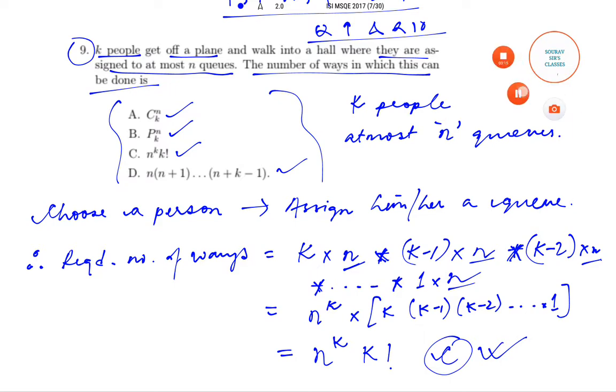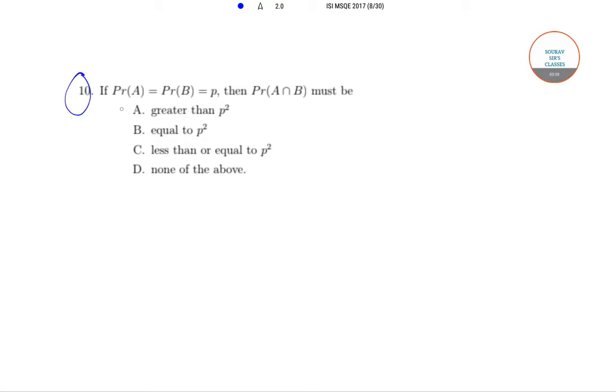In question number 10, it has been said that if probability of event A is equal to probability of event B which is equal to p, then the probability of the event A intersection B must be: greater than p square, equal to p square, less than or equal to p square, or none of the above. These are the four options.